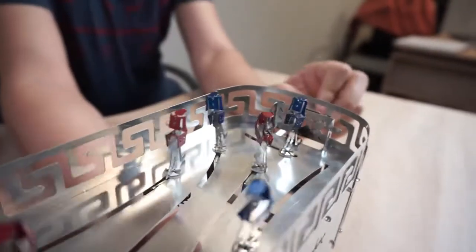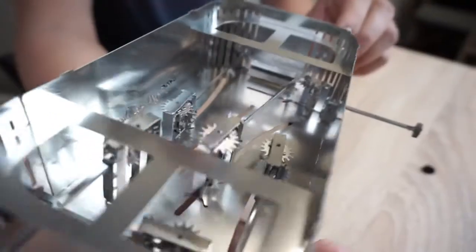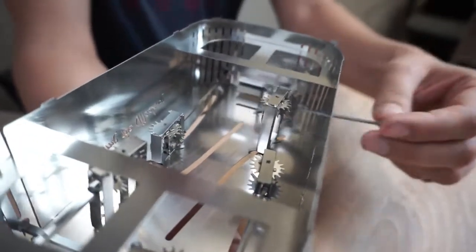By twisting the handles, you control the hockey players. This is how the bottom of the model looks. You can see the mechanics of how the players work.